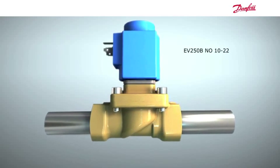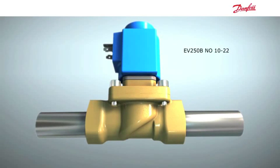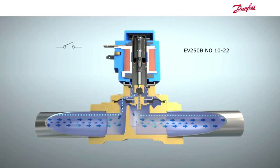Let's take a look at the function of the EV250B normally open. Cutting away part of the valve, we can see that it looks very similar to the EV250B normally closed.